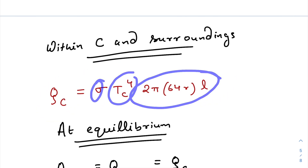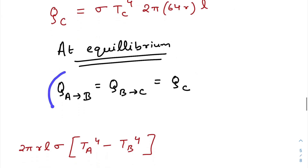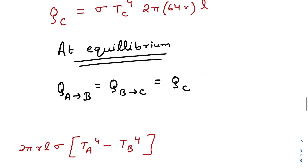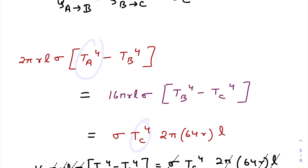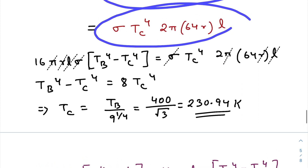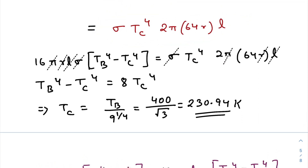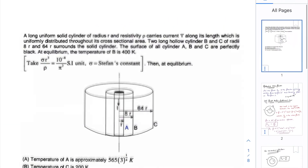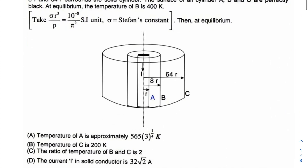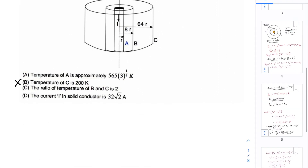At equilibrium, the energy from A to B equals B to C, which also equals C to surroundings. Setting these three equal allows us to find Tₐ and T_C. Equating the B-to-C and C-to-surroundings terms, we find that T_C = T_B / 9^(1/4). Putting T_B = 400 K gives T_C ≈ 230.94 K. This shows that option B is wrong.